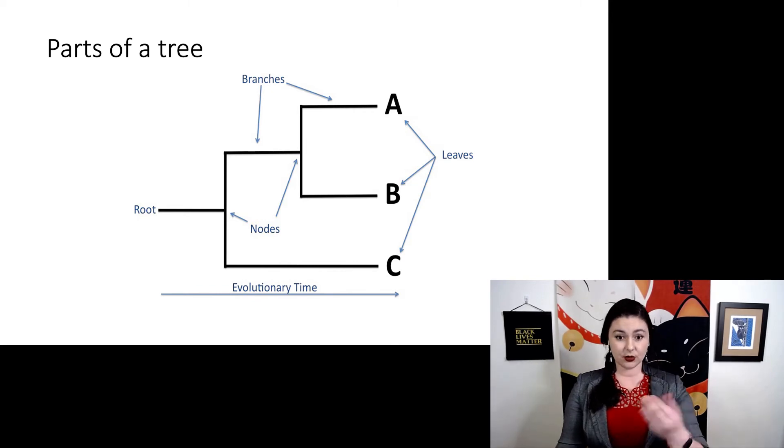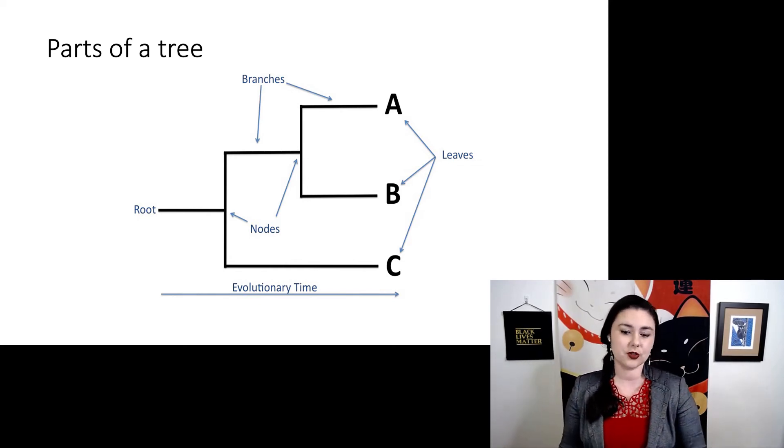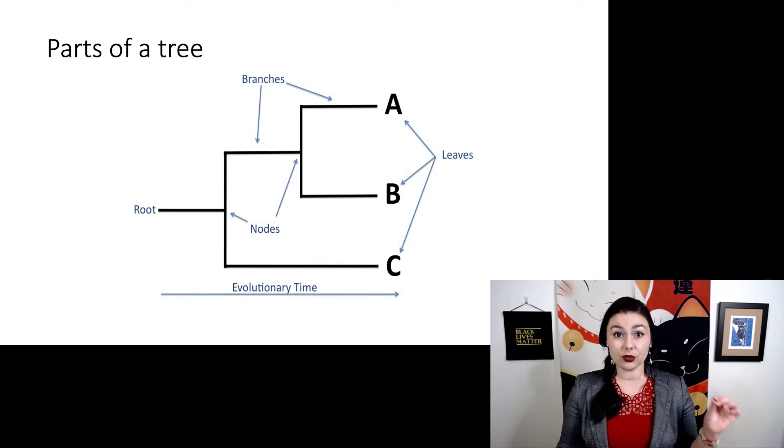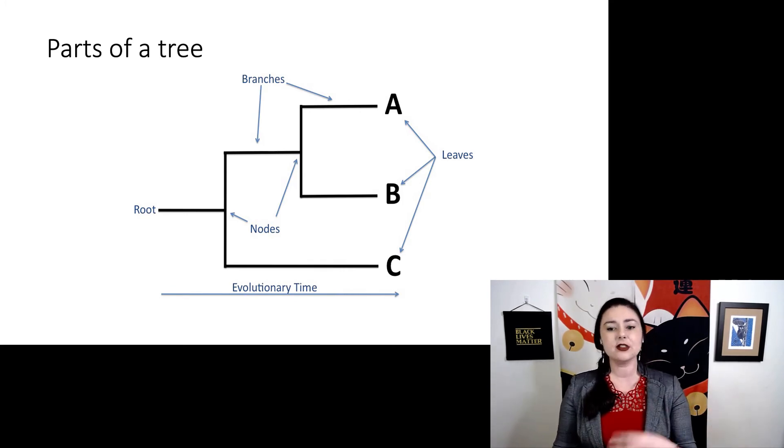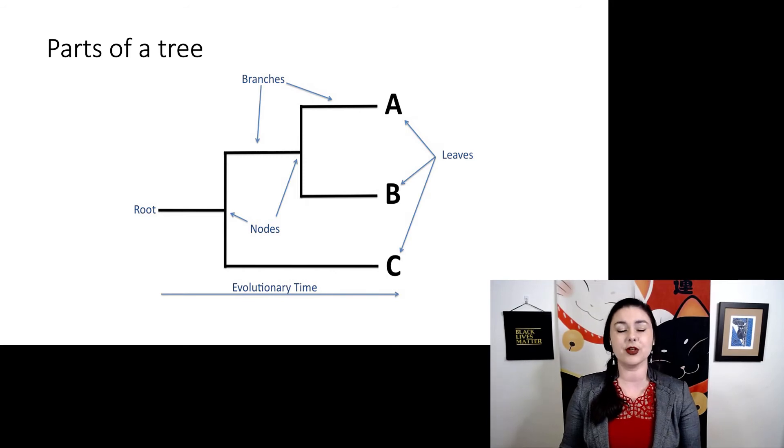So you might, so looking at here, there's a root. At the other end, we have the leaves. And in the middle, we have our branches and our nodes. So the root, that is the oldest part of the tree, that's the beginning of this tree. The leaves, sometimes called the terminal nodes, those are the things that are alive today. And time flows from the root towards the leaves.